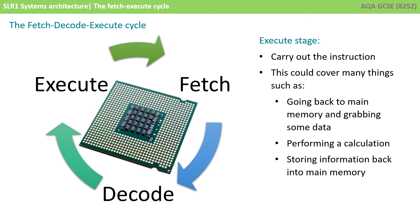Now it knows what it needs to do, the CPU can carry out or execute the instruction. This could actually involve many different actions depending on the nature of the instruction itself. For example, we might have to go back to main memory and get some data, we might be asked to perform a calculation, or we might be told to store information currently in the CPU back into main memory.